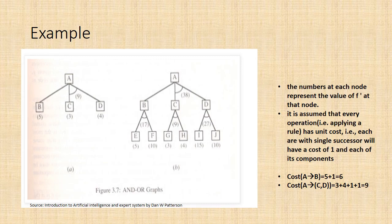In figure A, the top node A has been expanded producing two arcs: one leading to B and leading to C-D. The numbers at each node represent the value of f at that node - cost of getting to the goal state from the current state. For simplicity, it is assumed that every operation, i.e., applying a rule, has a unit cost - that is, each arc with a single successor will have a cost of 1 and each of its components. With the available information till now, it appears that C is the most promising node to expand since its f = 3, the lowest, but going through B would be better since to use C we must also use D and the cost would be 9 (3 + 4 + 1 + 1). Through B it would be 6 (5 + 1).